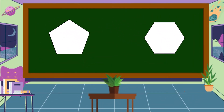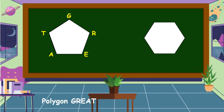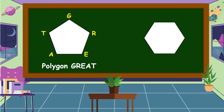We have two polygons here. We are going to name the vertices of the first polygon. This is vertex G, vertex R, vertex E, vertex A, and vertex T. We call this polygon as polygon GREAT.